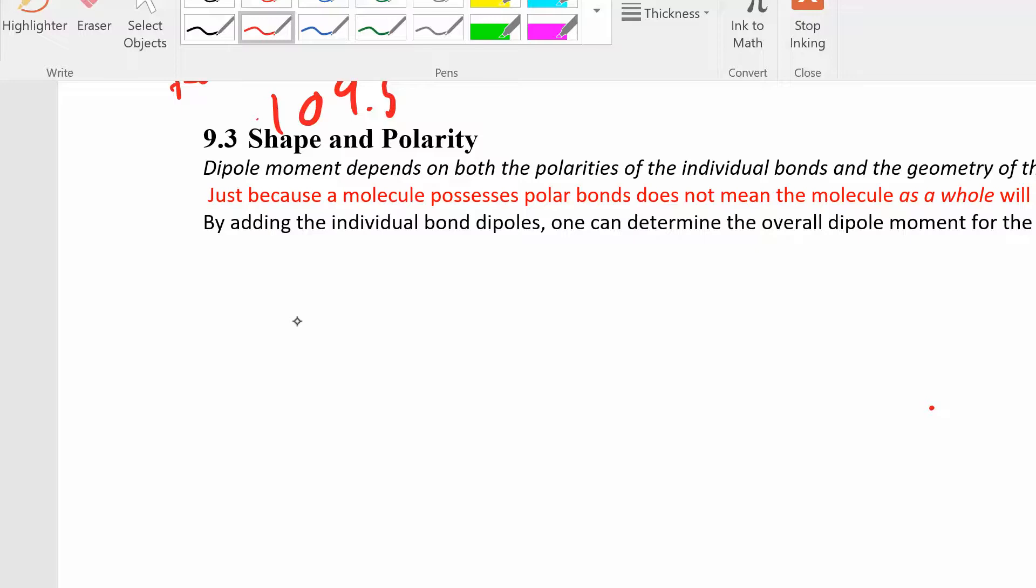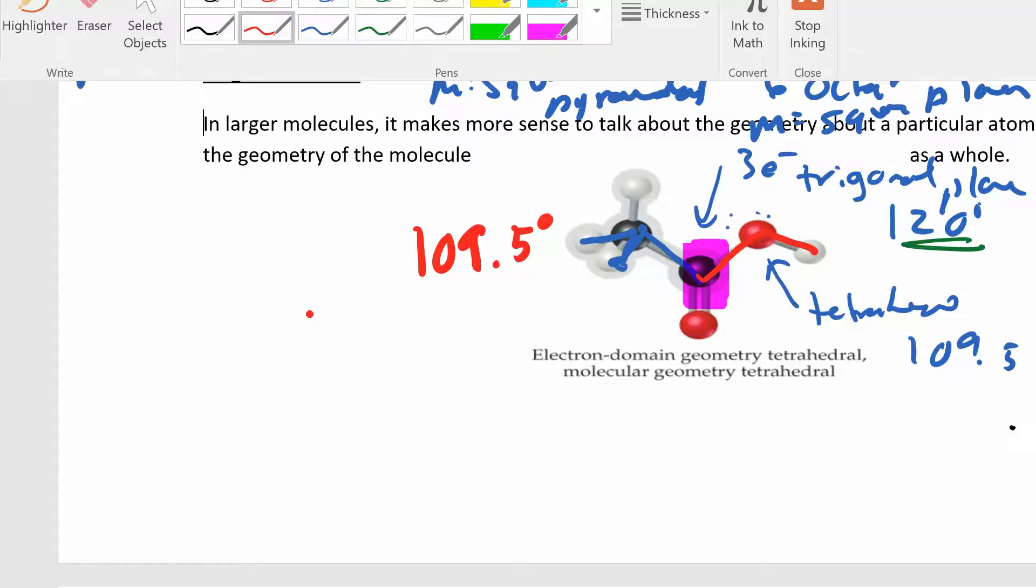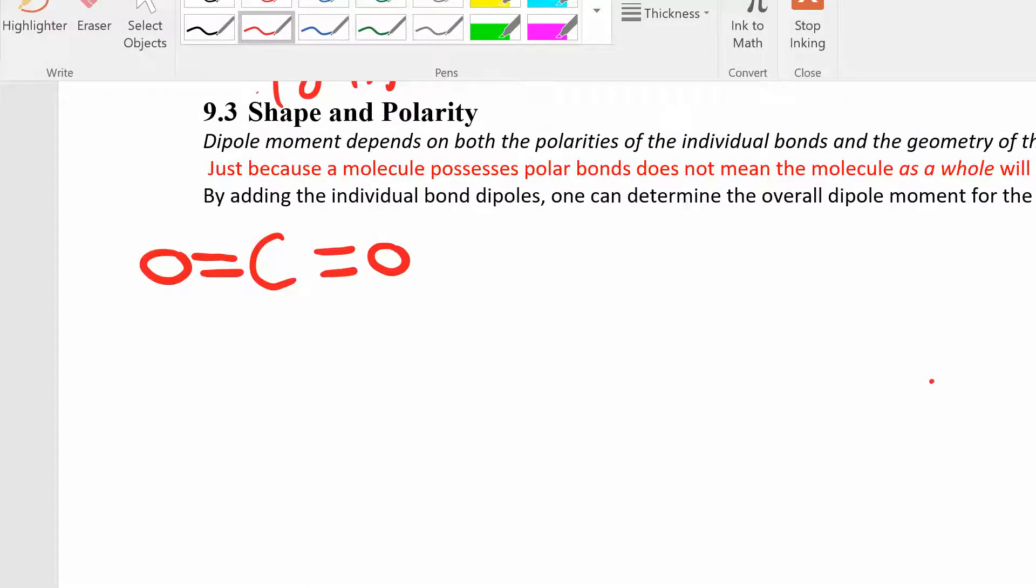So if we had something like carbon dioxide, I can look at the polarity of each one of these bonds and say that oxygen is more electronegative than carbon. So this side is going to be a little more positive, this side is going to be a little more negative, right? The partially negative charge on the oxygen looks like that. And then same thing's happening over here.